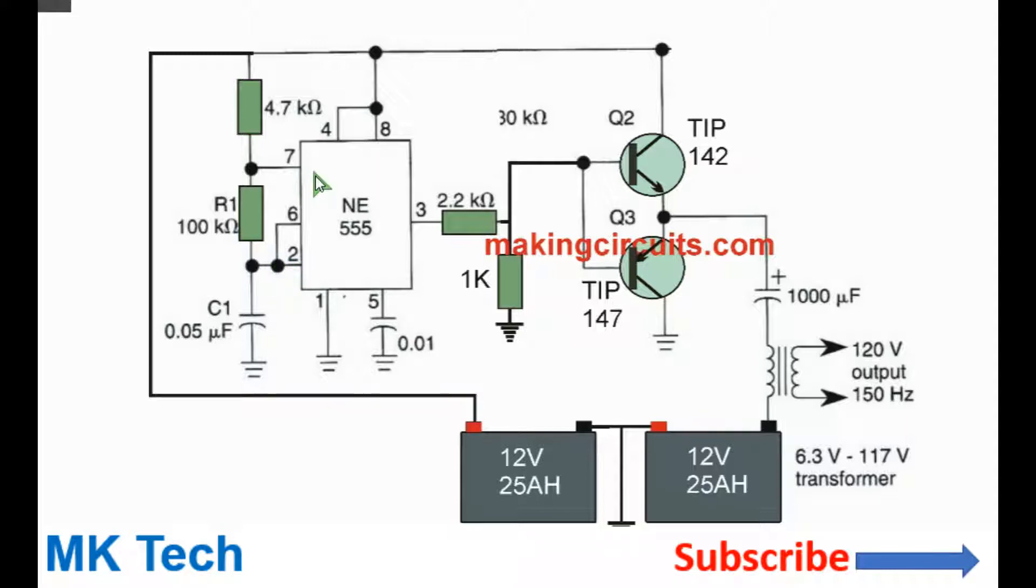The discharge pin 7 will discharge the capacitor to ground. So when the capacitor is discharging, it means that the output is low.